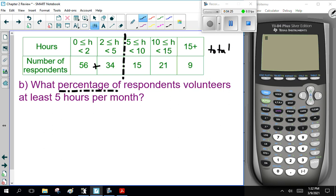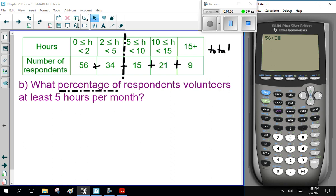So, 56 plus 34 plus 15 plus 21 plus 9. That's why I have to grab the calculator. 56 plus 34 plus 15 plus 21 plus 9 equals 135.